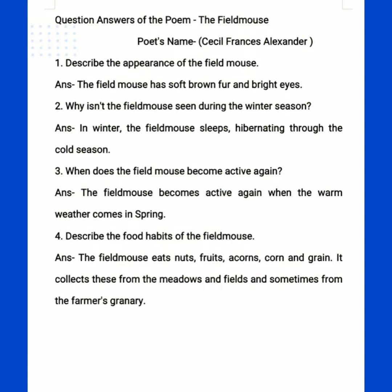Now come to fourth question: describe the food habits of the field mouse. Ki bhai field mouse ki food habits kya hain, wo kya khata tha, kahan se khata tha? The field mouse eats nuts, fruits, acorns — tree ko fruit hote hain unhe acorns kehte hain — and grain. So five things are mentioned: nuts, fruits, acorns, corn, and grain.